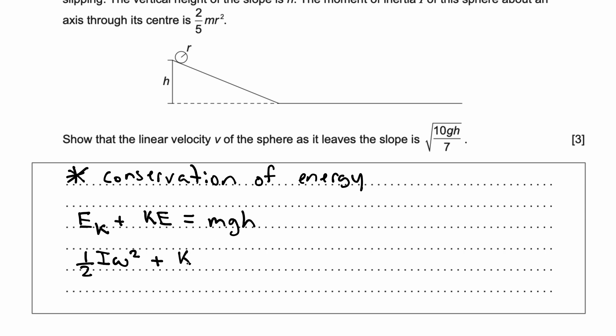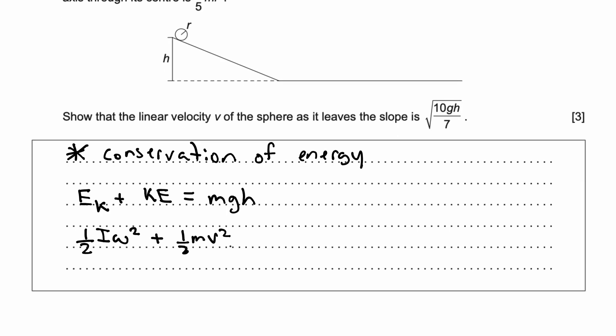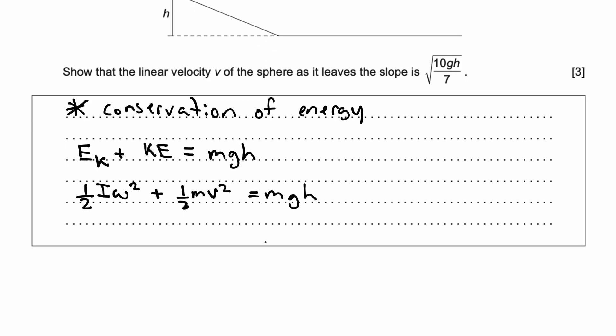your kinetic energy is your usual formula ½mv², where v is your linear velocity. And this equals potential energy mgh.